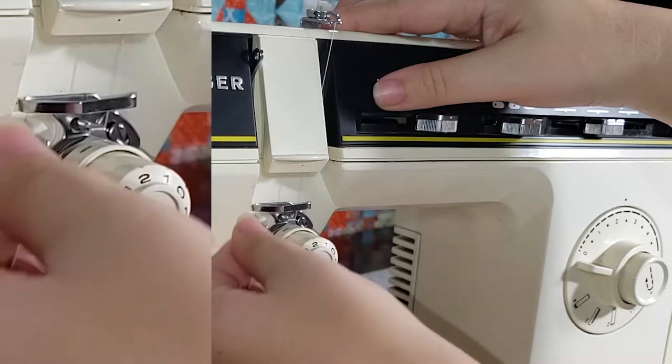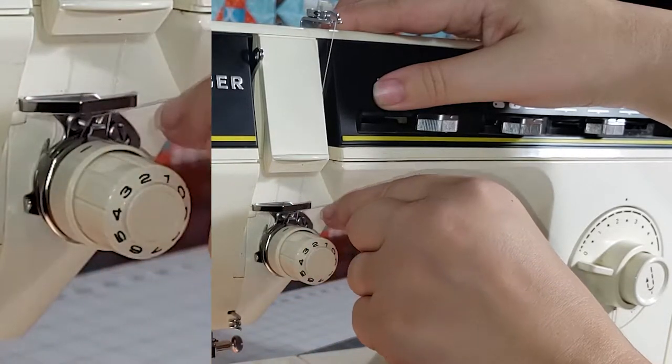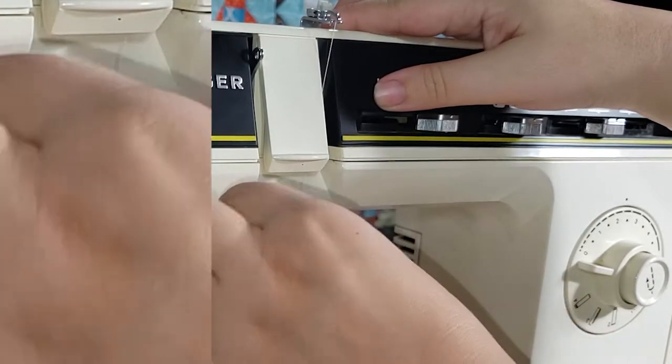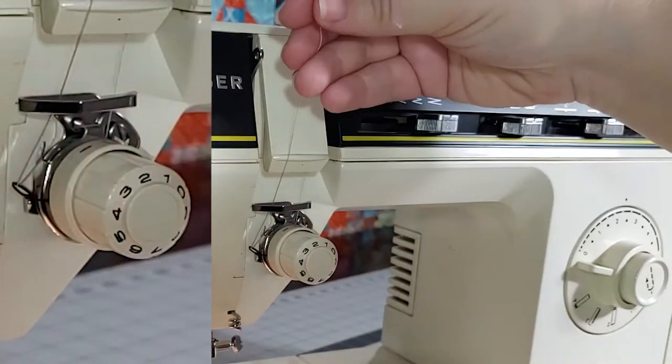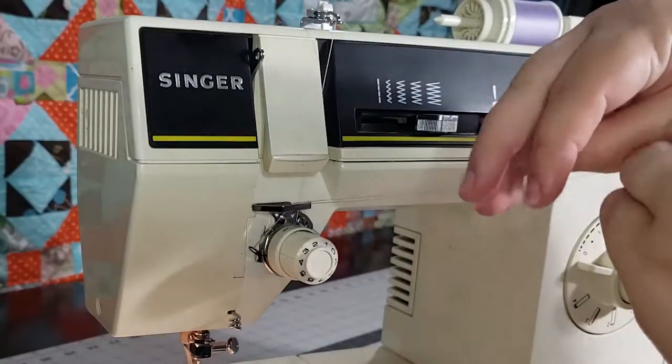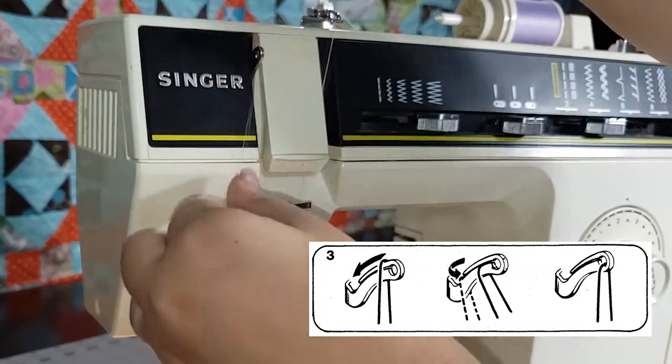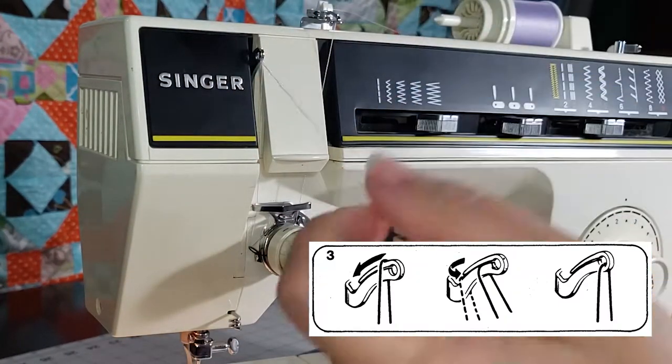Bring the thread back up, pulling against the spring. Lead the thread up and behind the metal thread guide. Guide the thread back into the take up lever by pushing the thread back into the gap, then pulling the thread back forward once it's caught by the lever.